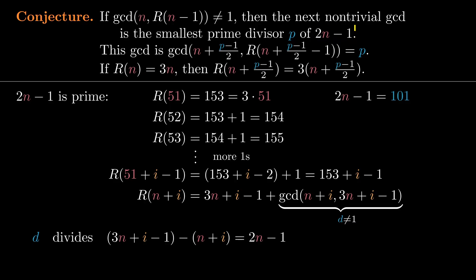This is half of what we wanted for the first part of our conjecture: we now understand why D is a divisor of 2n minus 1. The other half is to show it's the smallest prime divisor of 2n minus 1. In this example n is 51, so D divides 101. Since 101 is prime, D is either 1 or 101. But we're supposing D isn't 1, so D is 101. In general, since we're assuming 2n minus 1 is prime, there's only one possibility for the divisor D — it must be that same prime, so let's rename it P.